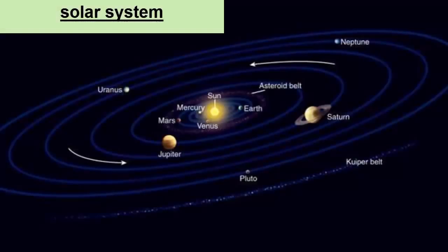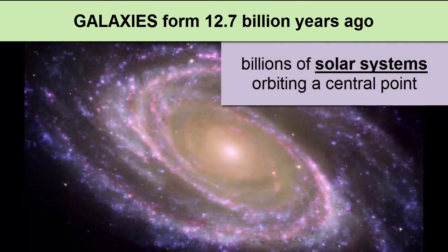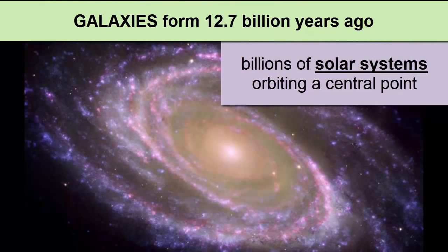The combination of a star and its orbiting planets is called a solar system. Now imagine you have billions of these solar systems developing from the massive amounts of gas in the early universe.